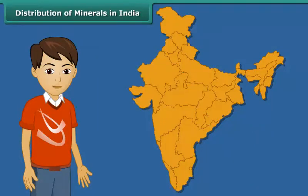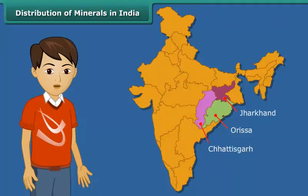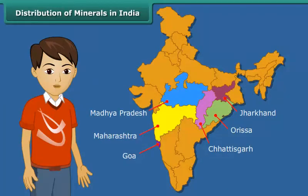Iron is found mainly in Jharkhand, Orissa, Chhattisgarh, Madhya Pradesh, Goa, Maharashtra and Karnataka.